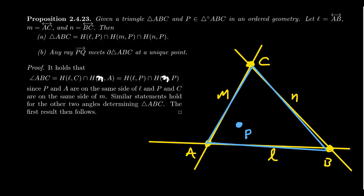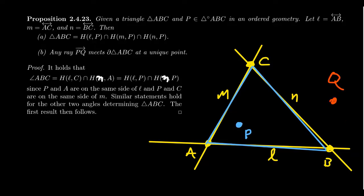Part B, which I'll leave as an exercise, states that any ray PQ — where P is an interior point of the triangle and Q is any other point — will intersect the boundary of the triangle at a unique point. It doesn't matter whether Q is inside, on, or outside the triangle; the ray from P toward Q necessarily intersects the triangle's boundary at exactly one point.